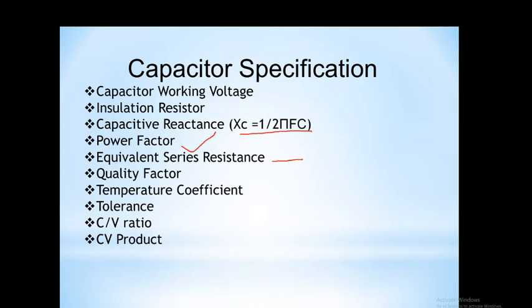The quality factor is the ratio of energy stored to energy dissipated per cycle. This quality factor indicates the component's ability to store energy compared to the energy it dissipates. The temperature coefficient is also an important factor, as there may be a change in the value of capacitance because of a change in temperature.